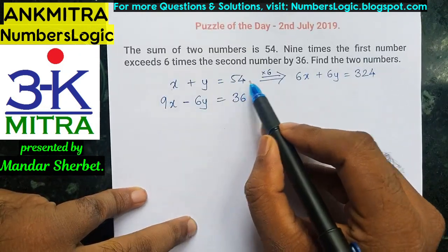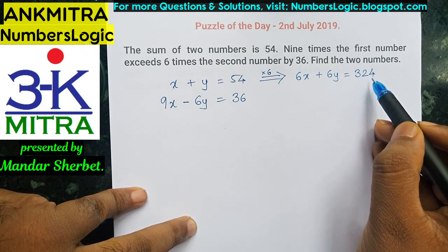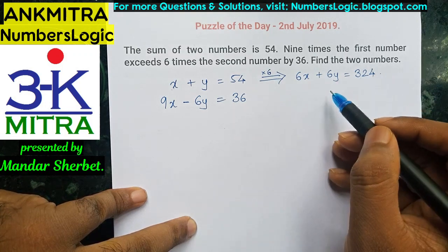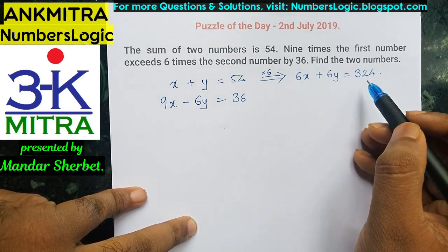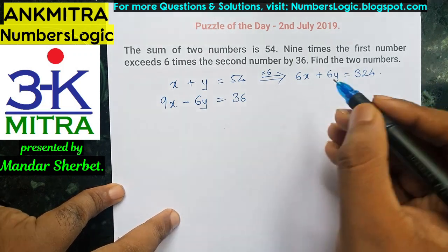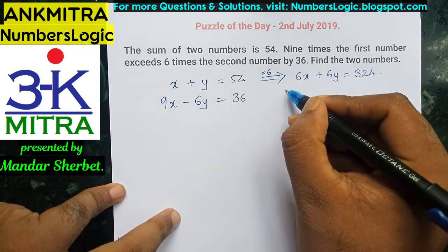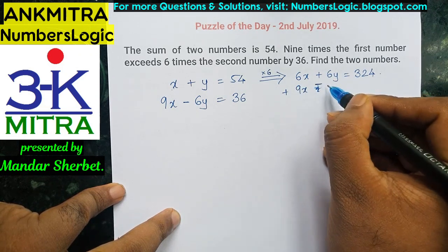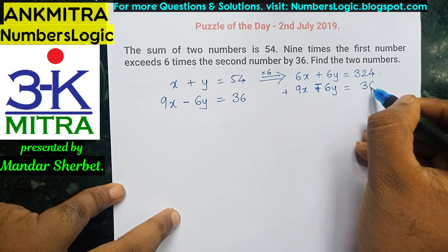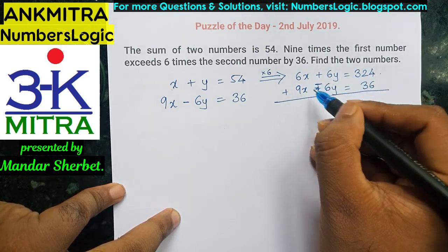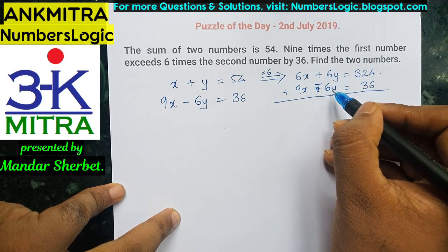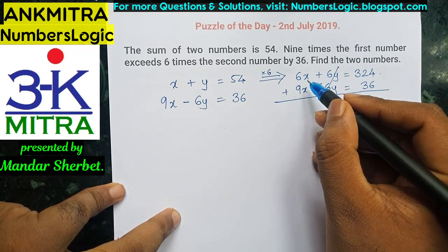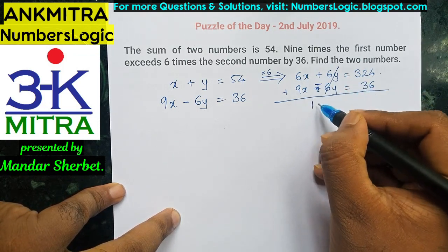So the first equation multiplied by six gives us that result. Now if we add both equations together — adding 6x plus 6y equals 324 and 9x minus 6y equals 36 — the 6y and minus 6y cancel out, resulting in zero.